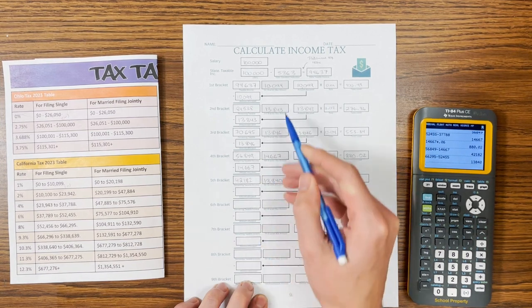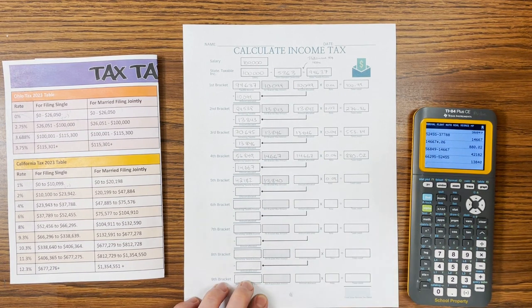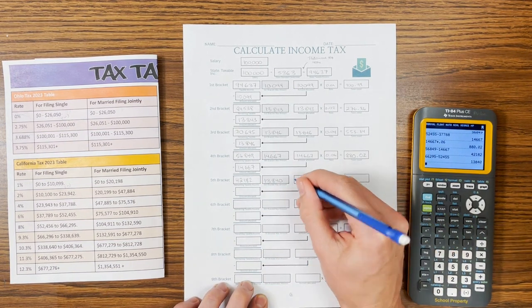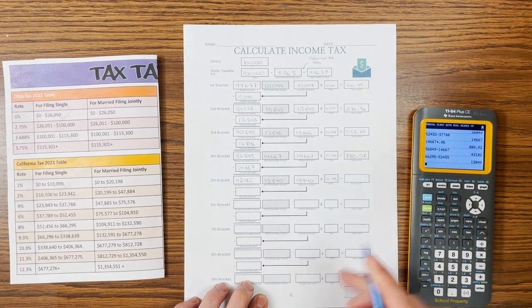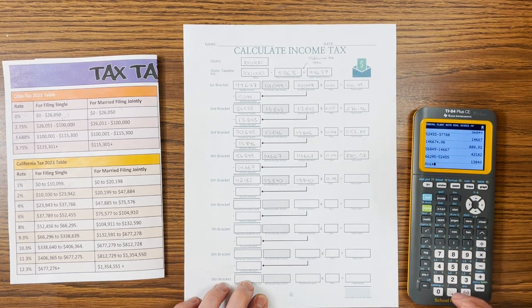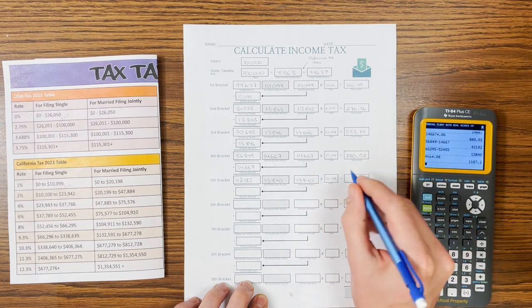You notice all these brackets are kind of the same size. They're between $10,000 and $15,000. The next one's going to be a lot bigger. So we've got still more than that again. So $13,840 in times .08. So we get $1,107.20.